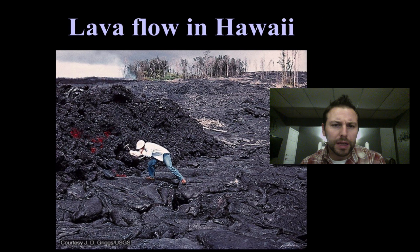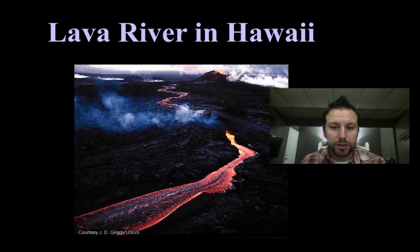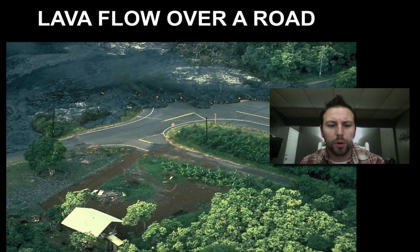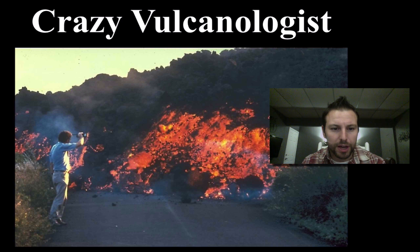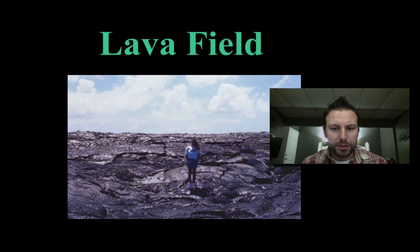Here's a lava flow in Hawaii. We can see this black material and the red hot lava — this material is relatively new. These are rivers of extremely hot molten material flowing over a road, possibly causing major destruction. Here's a volcanologist taking recordings of this lava flow, and here's another one moving through a forest.